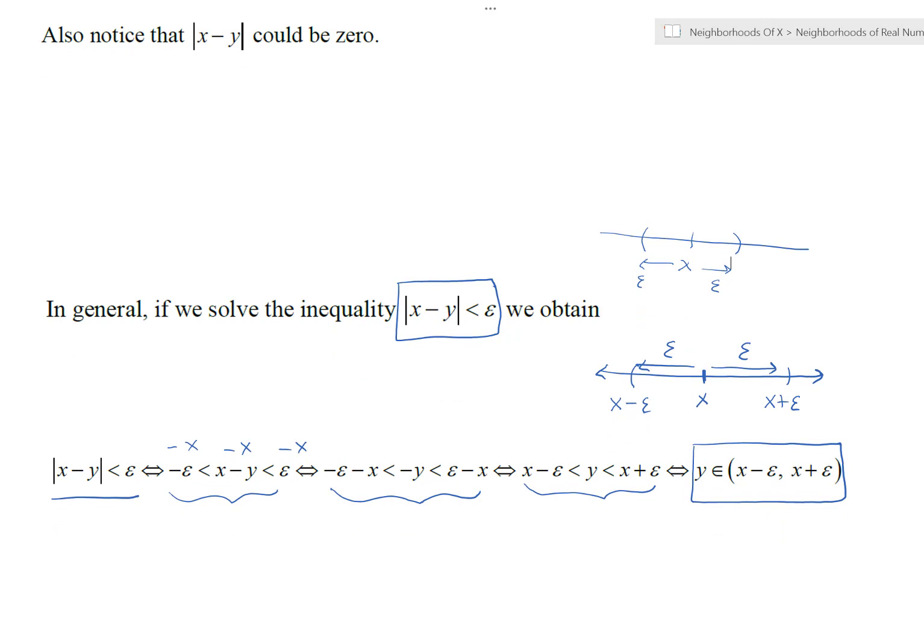We like these epsilon neighborhoods because the motivation is to formally define limits and to prove what certain limits are, and for that we need neighborhoods.